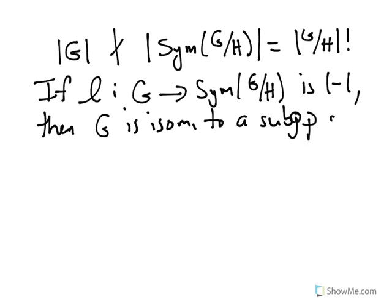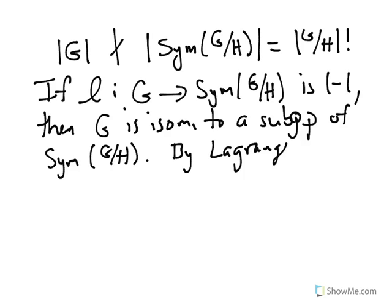Once we know it's isomorphic to a subgroup, then Lagrange's theorem kicks in. That would tell us that the order of G is going to divide the order of sym G mod H, which is a contradiction.